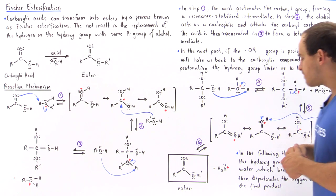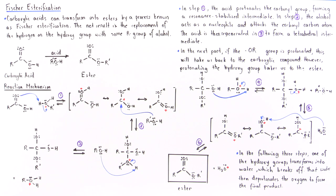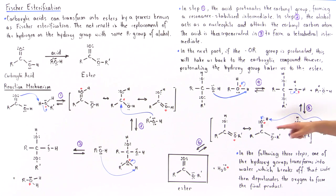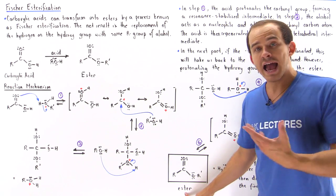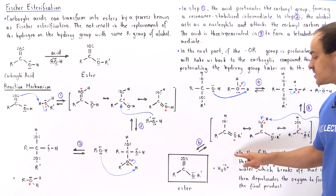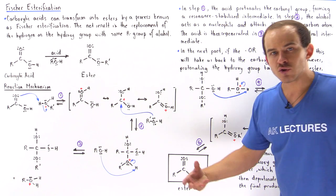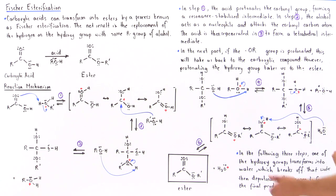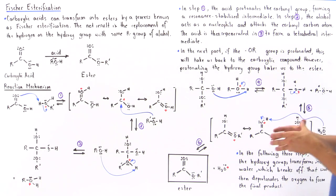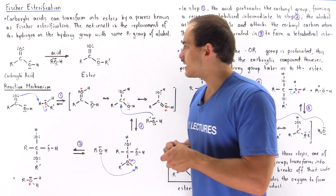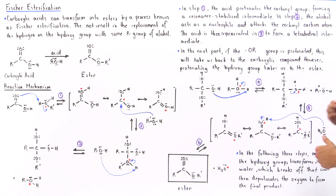In the final step, that water molecule formed in step five acts to deprotonate the oxygen of the carbon-oxygen double bond, taking away the H and removing the positive charge from the electronegative oxygen. The final product is the ester, as well as the hydronium molecule. This is the acid that has been regenerated, because in step four we used up the conjugate acid. So we see that Fischer esterification is a six-step reaction mechanism in which we transform the carboxylic acid to our ester.